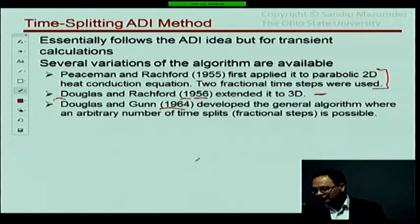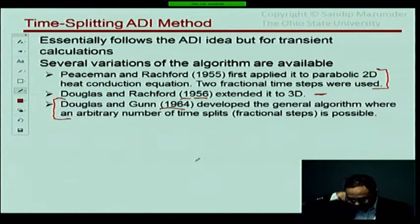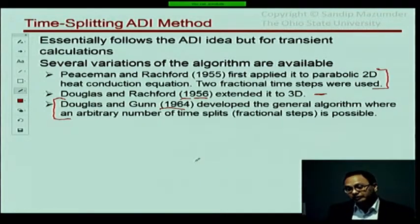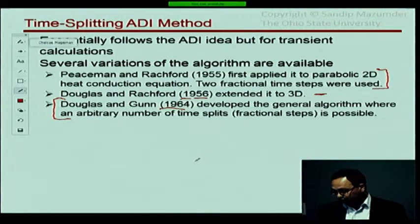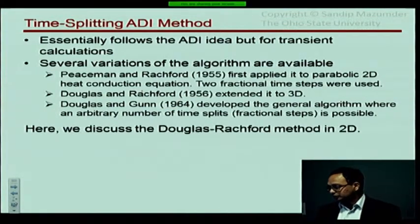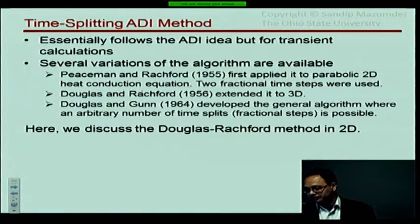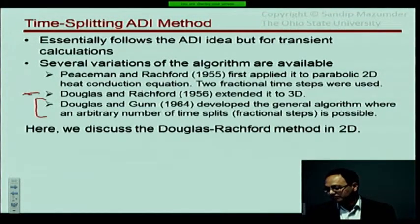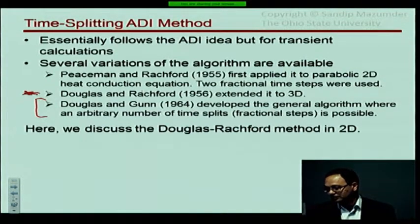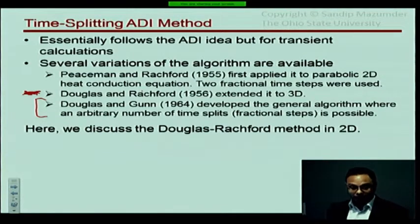Douglas and Gunn came up with a method where you can do an arbitrary number of time splits within one time-step and an arbitrary number of sweeps—that's the most general approach. Today we are going to talk about the Douglas-Rachford method for 2D, which is probably the more popular one.